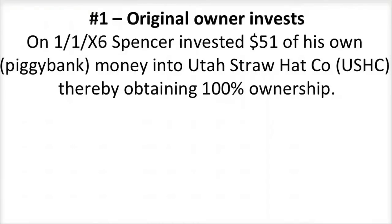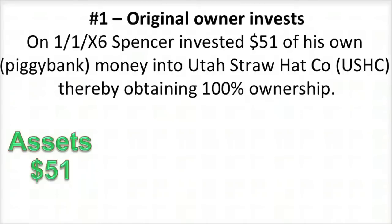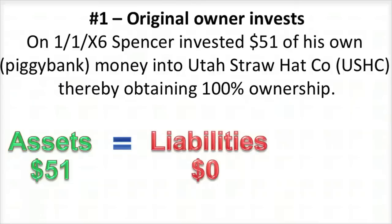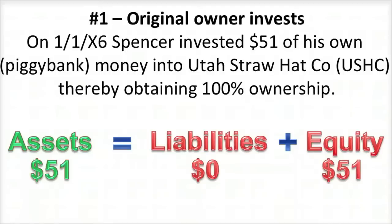Let's dig into Spencer's new business starting on day one. On January 1st, X6, Spencer, the original owner, invested $51 of his own piggy bank money into Utah Straw Hat Company, thereby obtaining 100% ownership. USHC's assets will increase $51, representing the cash received. Liabilities have not changed because Spencer did not loan the money but rather invested and became an owner. Assets increased by $51 and his equity increased by $51.